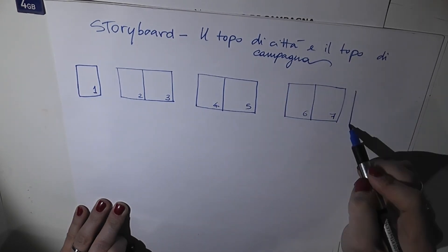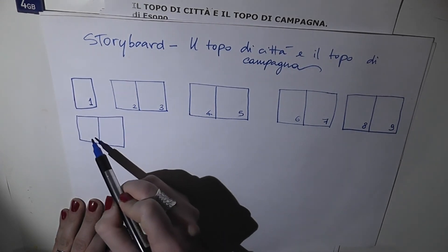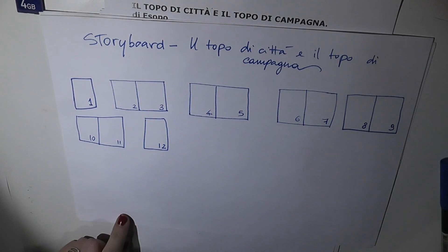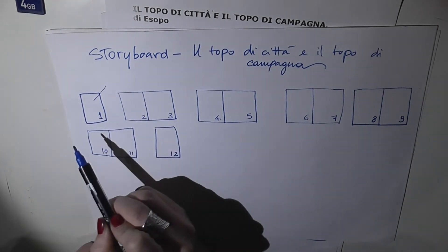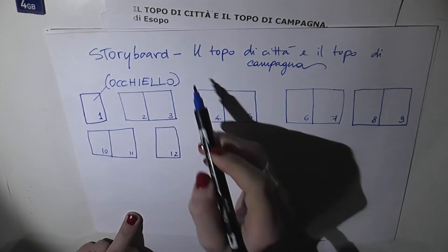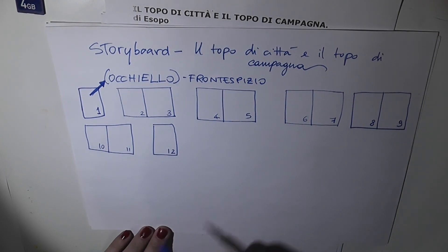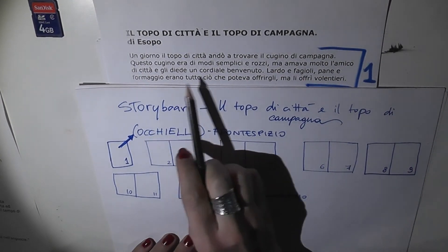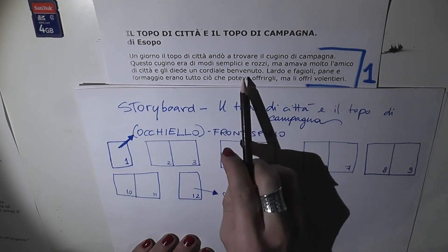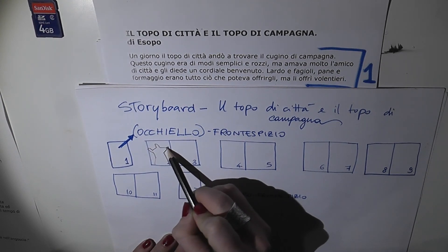Come vedete ci sono più pagine rispetto ai paragrafi che ho individuato nel testo. Questo perché desidero che ogni parte del testo coinvolga una doppia pagina illustrata. Per esempio, il paragrafo numero 1 interesserà la pagina 2 e 3 e quindi ci sarà un'illustrazione che riempirà tutte e due le pagine. Nella pagina 1 abbiamo previsto l'occhiello: in questa pagina c'è il frontespizio e l'occhiello non è altro che il richiamo del titolo di copertina con annesse illustrazioni. Comincio quindi a prevedere le illustrazioni per ogni doppia pagina, e nelle pagine 2 e 3 ho deciso di far vedere i due topolini che condividono un semplice banchetto campagnolo.